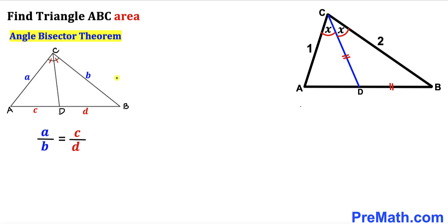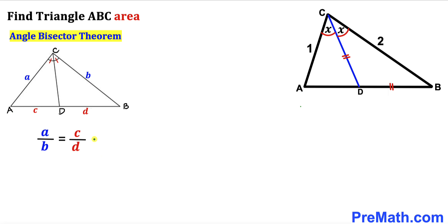Here we have triangle ABC along with angle bisector CD. If this side length is represented by lowercase a, this side length is lowercase b, segment AD is lowercase c, and segment BD is lowercase d, then we have a proportion: a divided by b equals c divided by d.